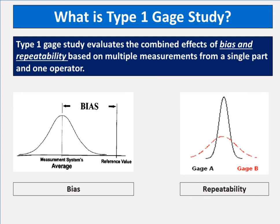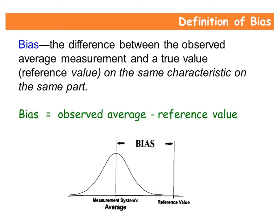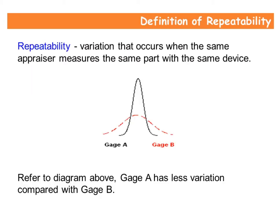Type 1 gauge study evaluates the combined effects of bias and repeatability based on multiple measurements from a single part by one operator. Bias is the difference between the observed average measurement and a true or reference value on the same characteristic on the same part. Bias equals observed average minus reference value. Repeatability is the variation that occurs when the same appraiser measures the same part with the same device.